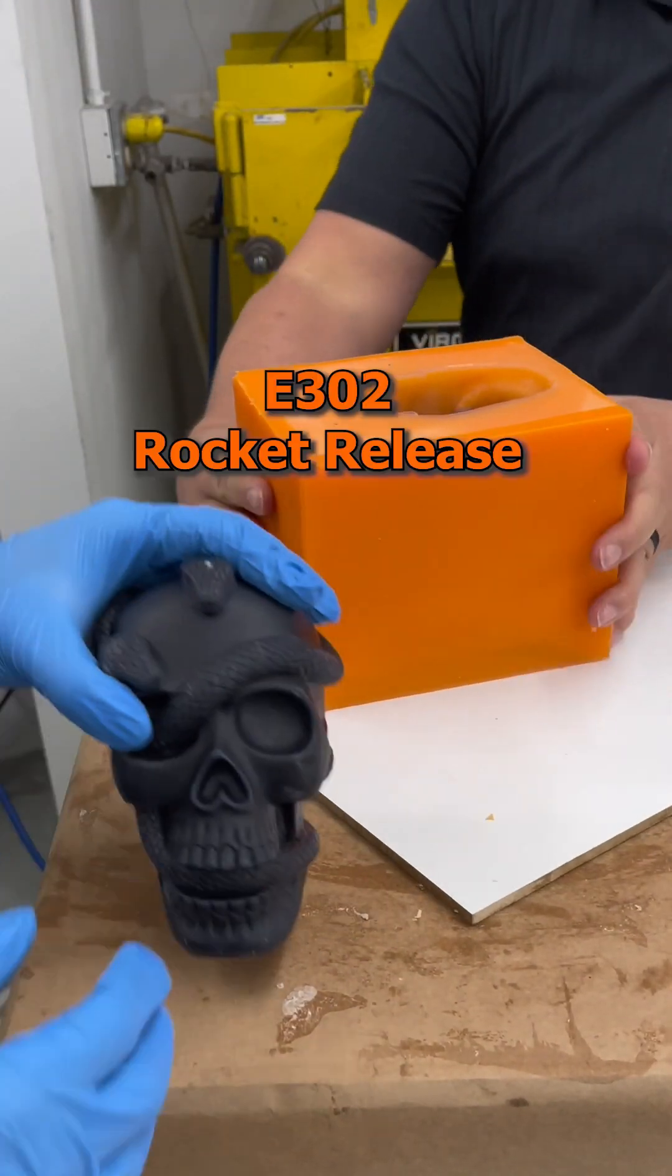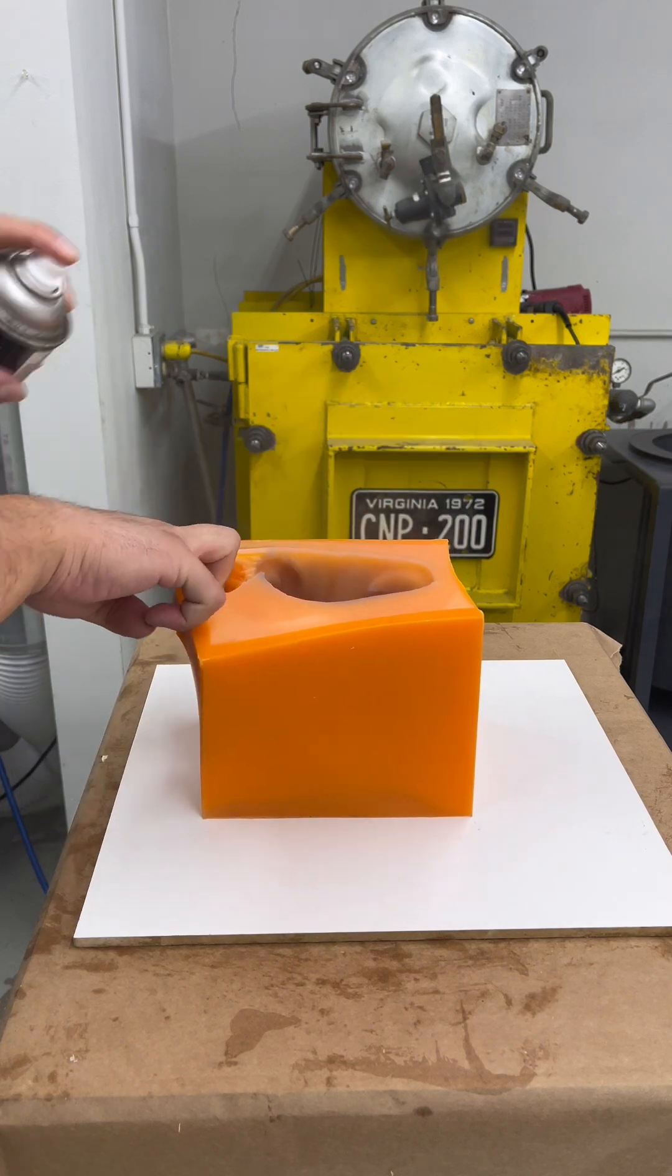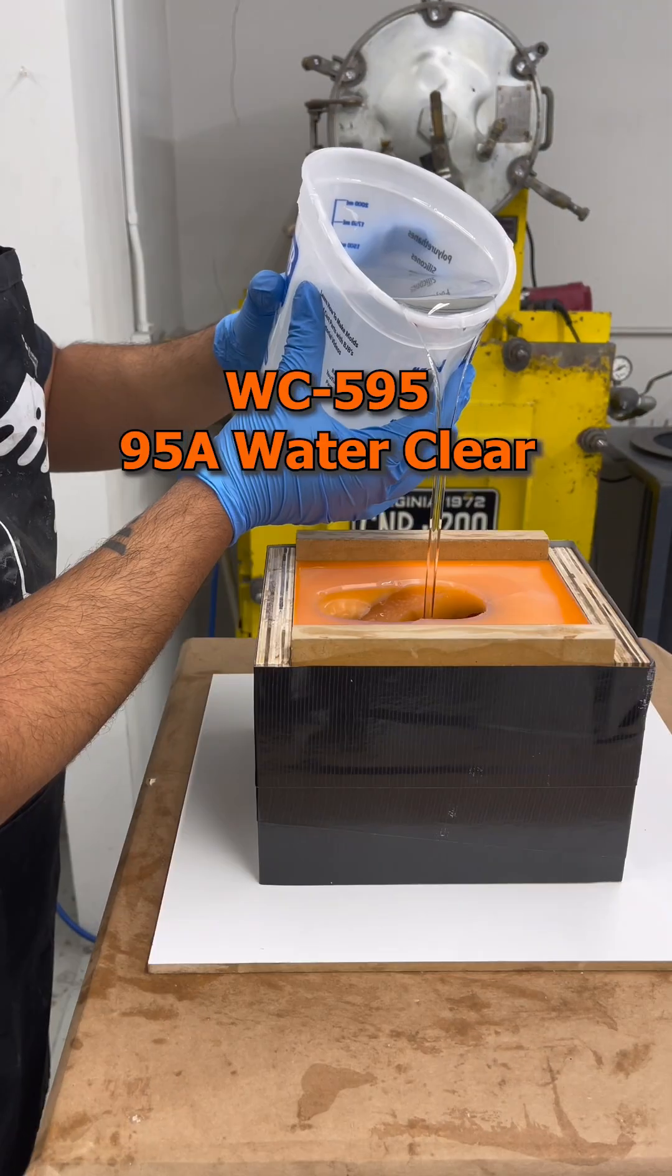After securing the mold and spraying it with Mold Release, I poured in our clear, durable WC595 polyurethane.